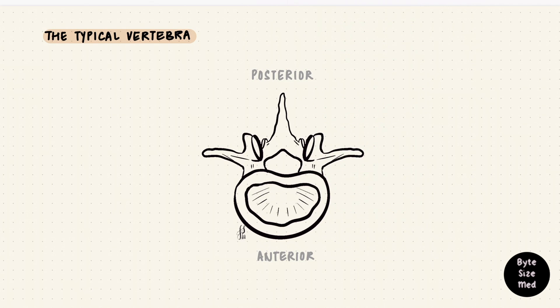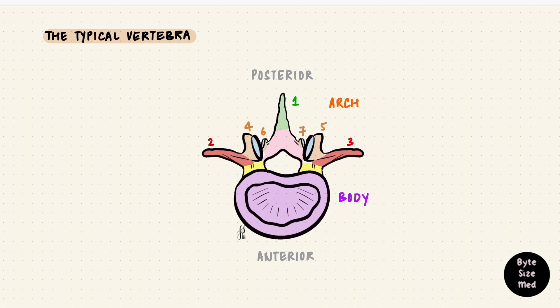So we have the vertebral body anteriorly, the vertebral arch posteriorly, and the vertebral foramen between them. The body and the arch are attached by two pedicles. From the pedicles, there are two laminae. Where they unite, there is a spinous process extending backwards. On the sides, two transverse processes, and four articular processes, two superior and two inferior. A total of seven processes. That is a typical vertebra.